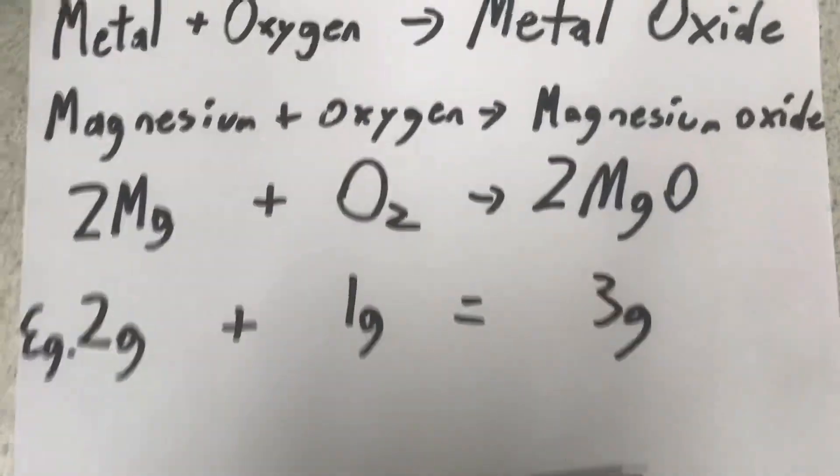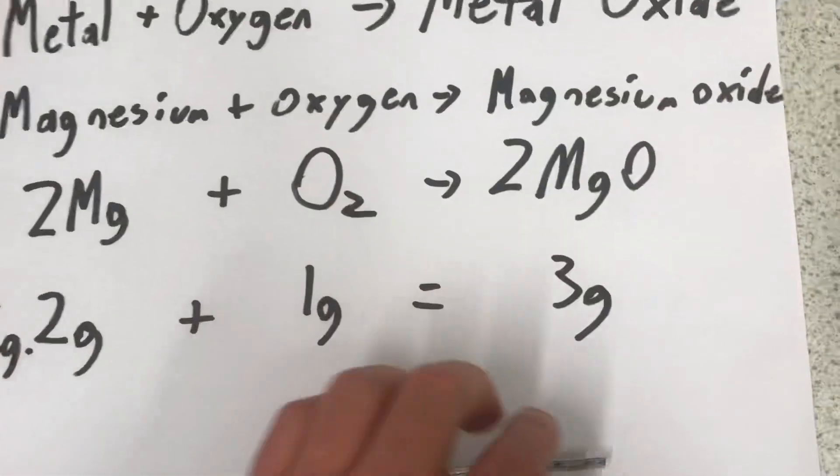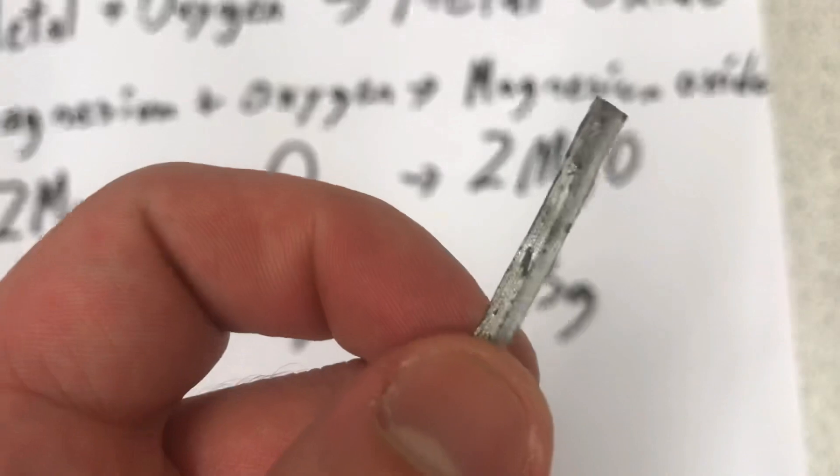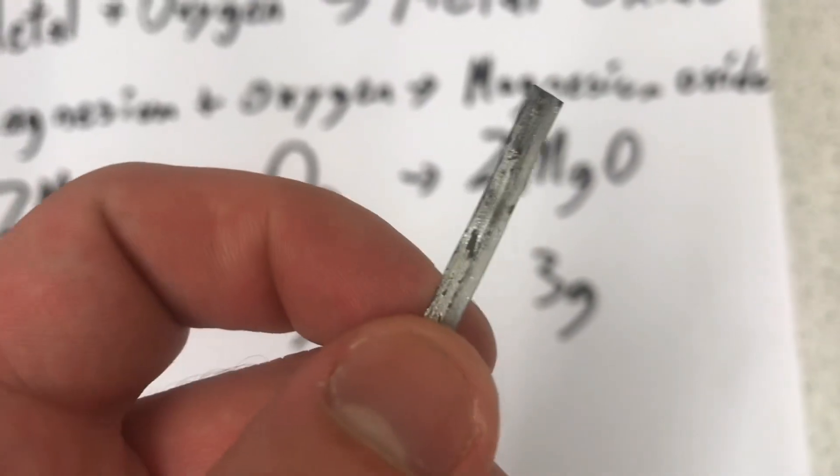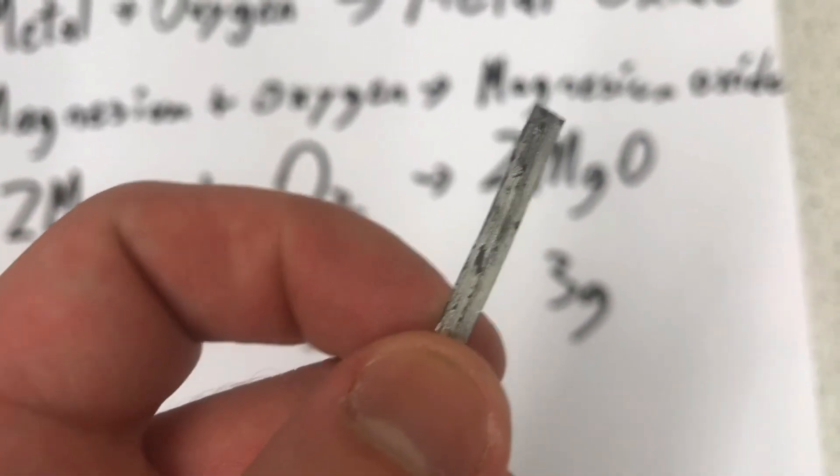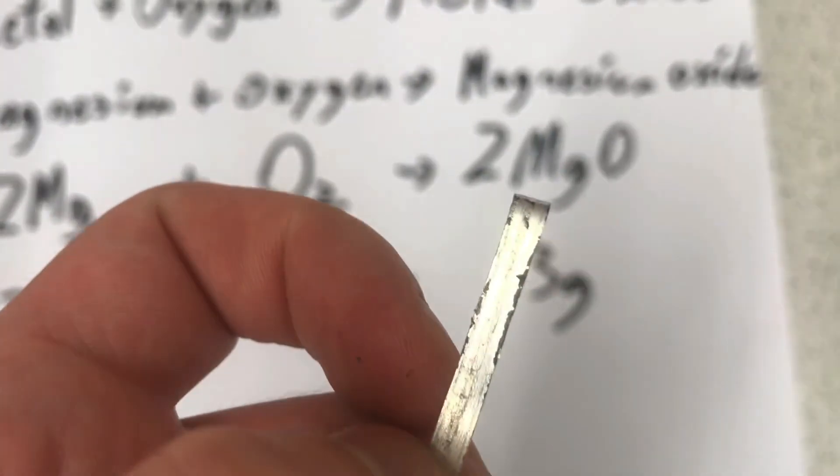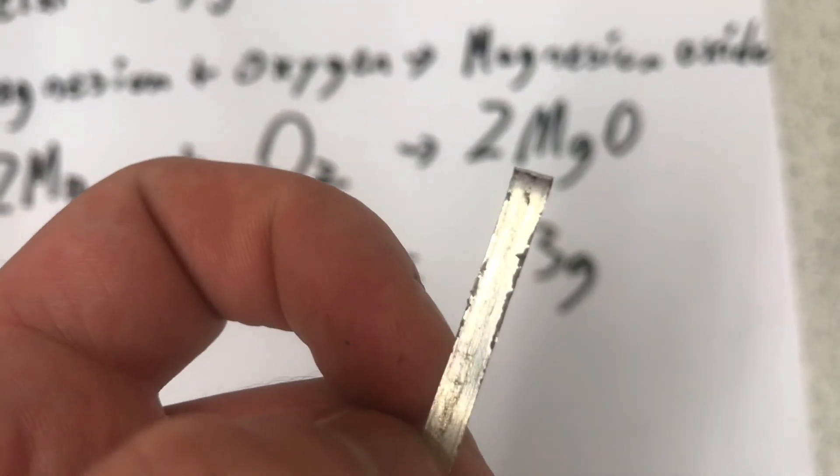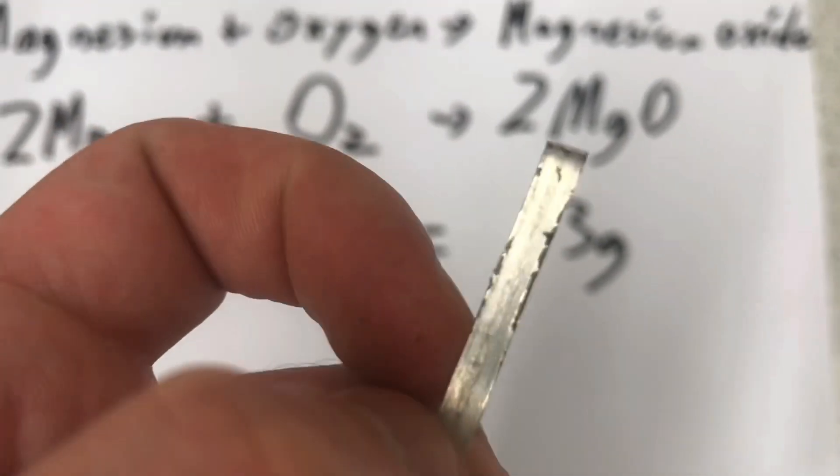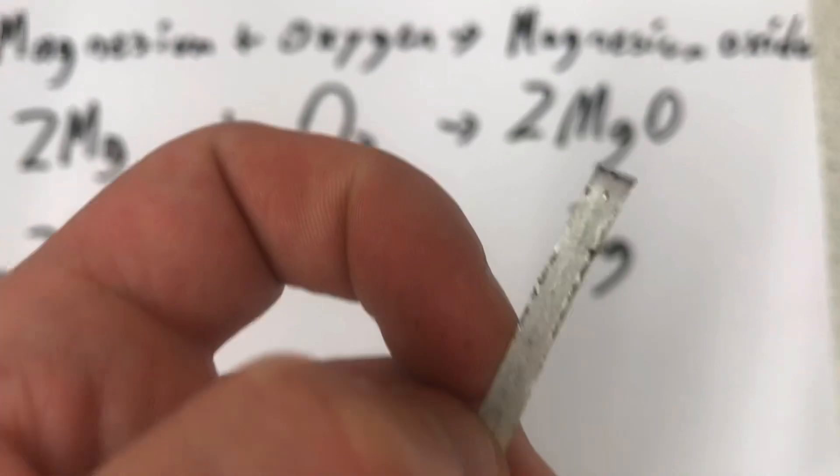Now, magnesium oxidizes in the air to form a black layer of magnesium oxide on the metal that you can see here. The part that's dull is magnesium oxide. So, I've used emery paper to shine this magnesium to make it very lustrous. That's the scientific word for shiny, so that it has no oxide on it at all.